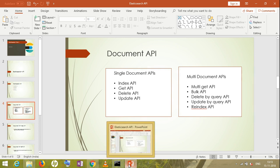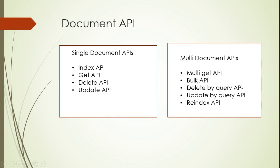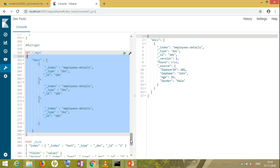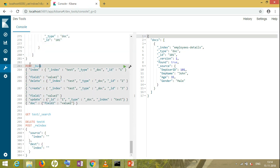Bulk API means we are performing operations on a bulk of documents. In a table with bulk records, I can perform update, delete, and create operations all at the same time. This makes the response come back at a much faster rate. I'll show you a simple example — it's _bulk, and you don't need to write the index name separately.